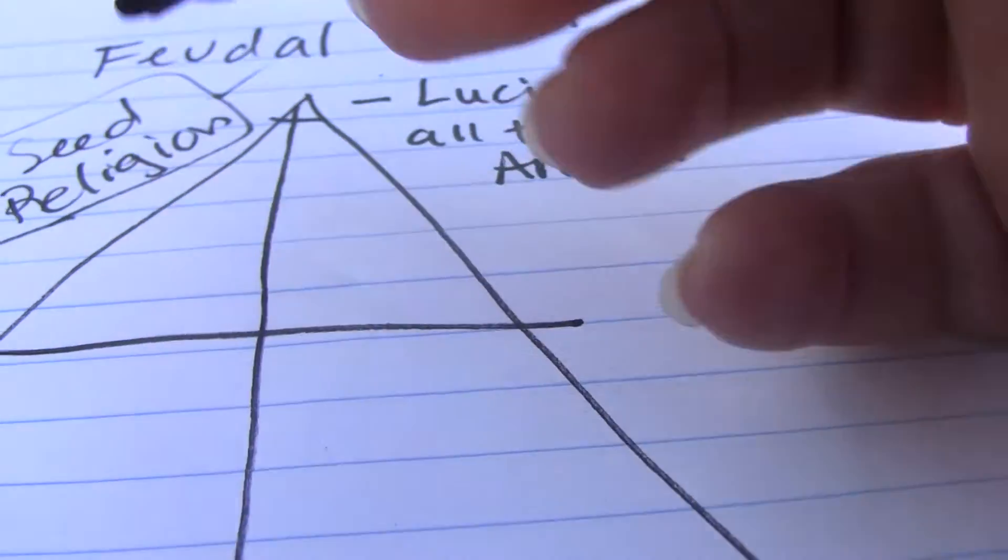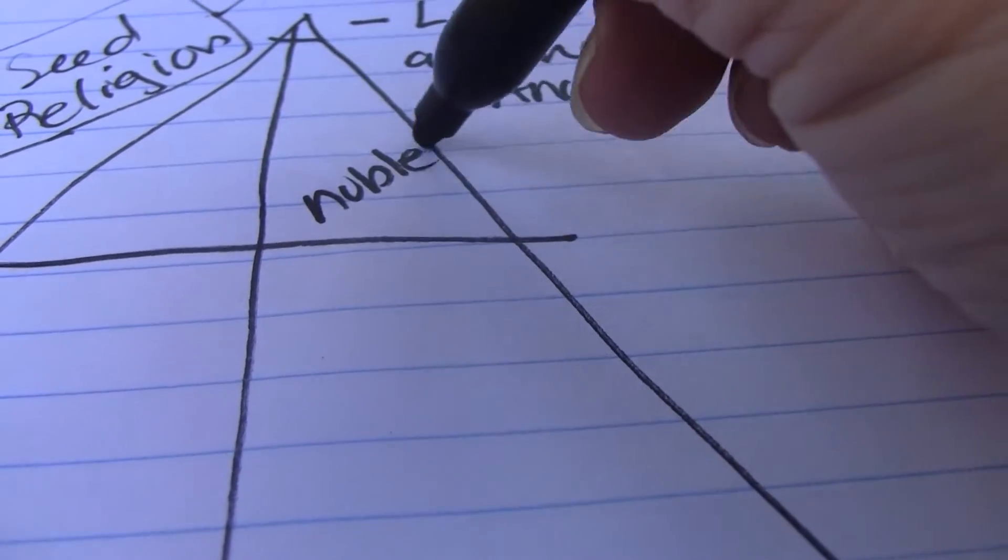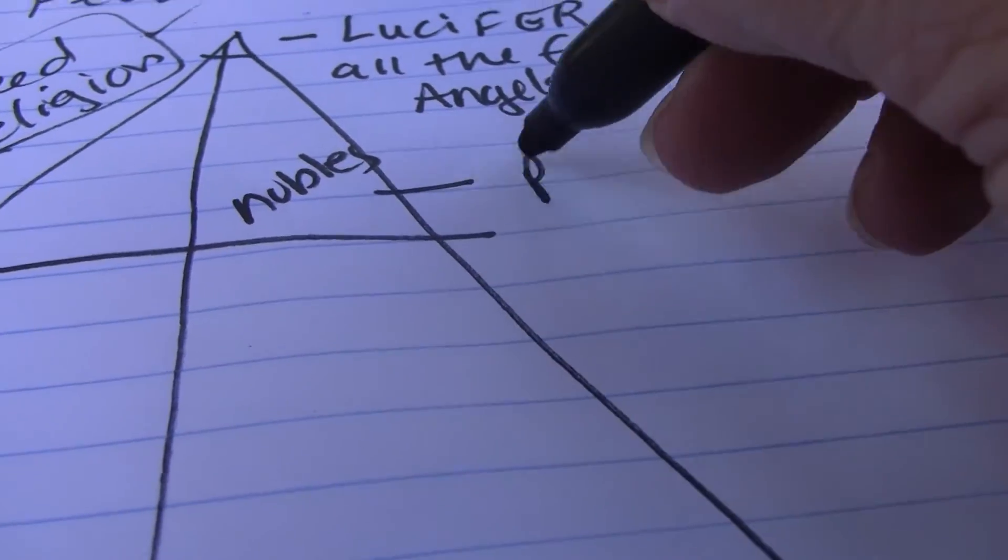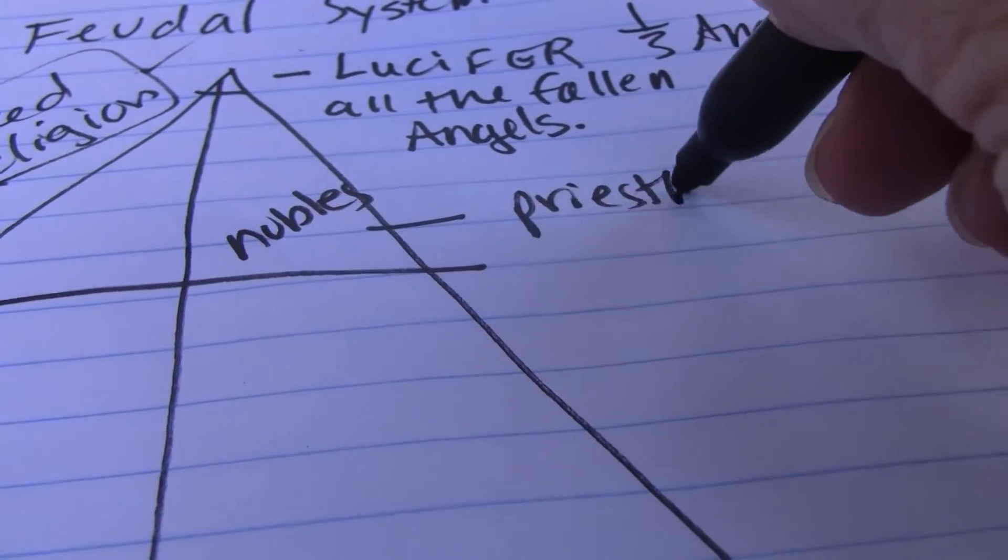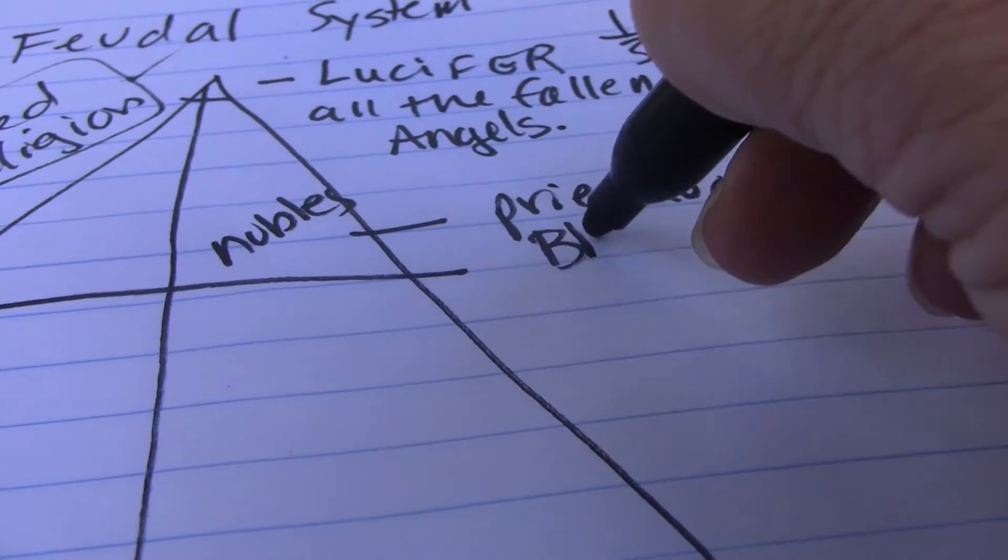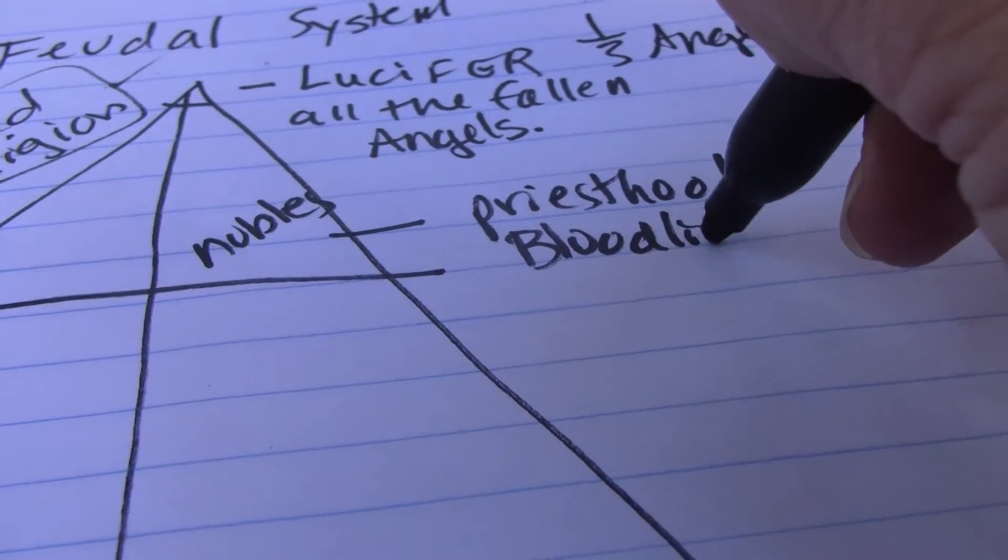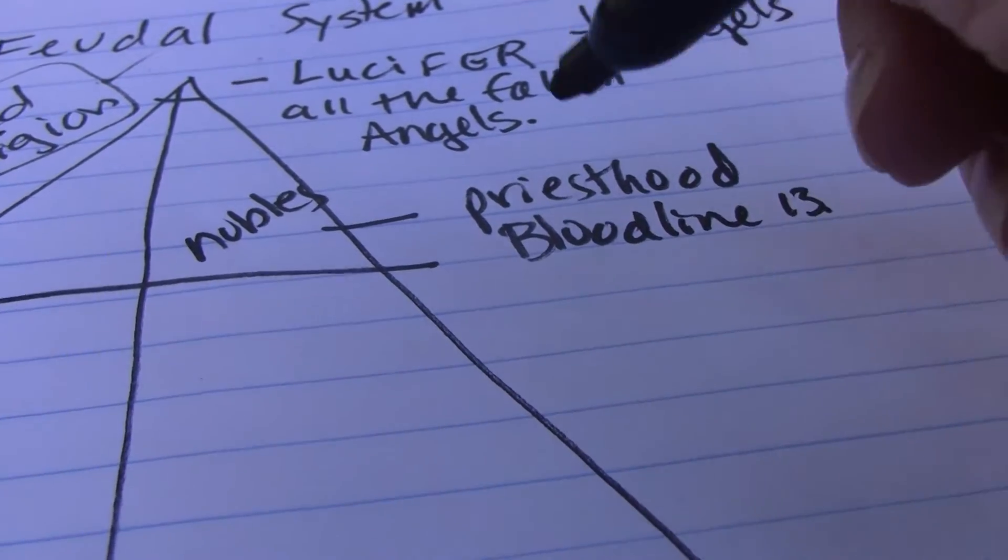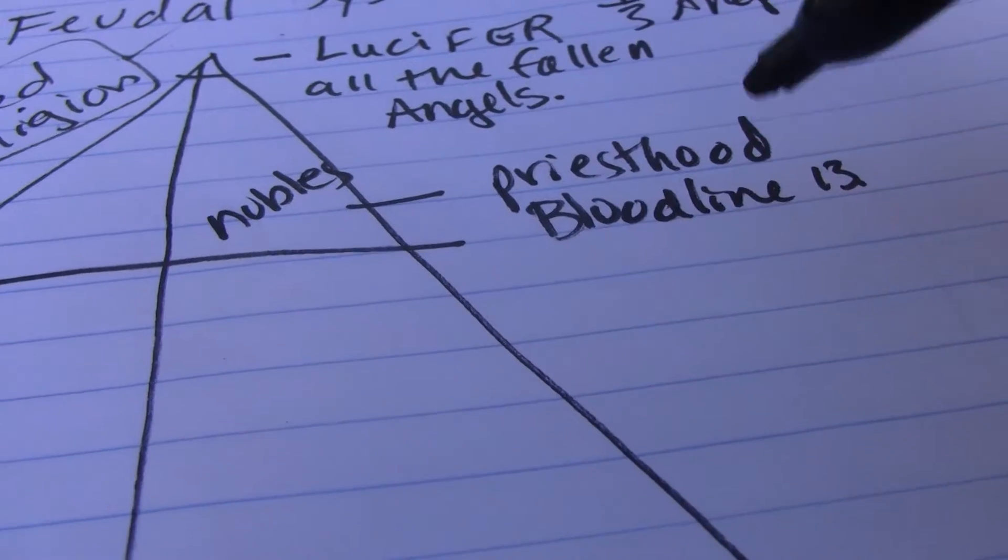Then take this you slide it down here. Over here you got your nobles. This is the priesthood and his bloodline families. Thirteen of them right. I just went through them. You're a Sini and all of them.